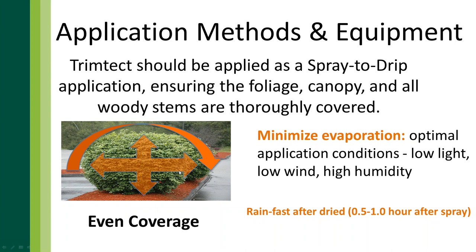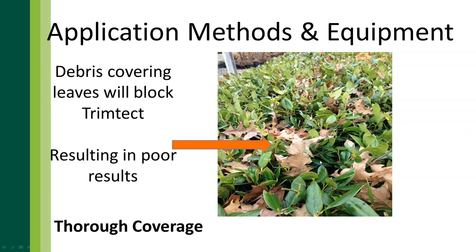The big question we always get is rain fastness. As soon as TrimTech has dried on the plant, it will have absorbed as much active ingredient as possible. As long as the application has dried before a rain event — generally within a half hour to an hour after application — you should be fine. Some reasons why an application might not work well: if there are leaves or clippings on the plant that will intercept TrimTech, the paclobutrazole active ingredient gets held up in organic material. Make sure leaves are raked or blown off and that pruning clippings are removed from the plant.